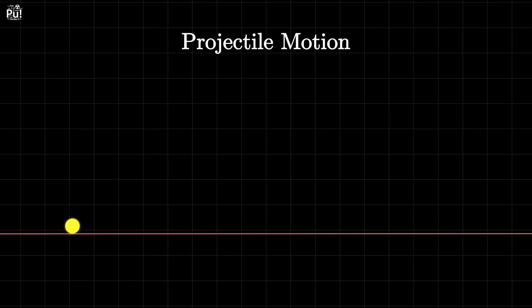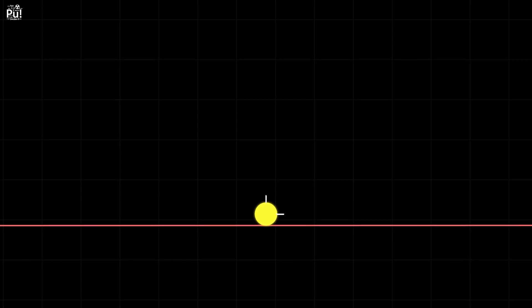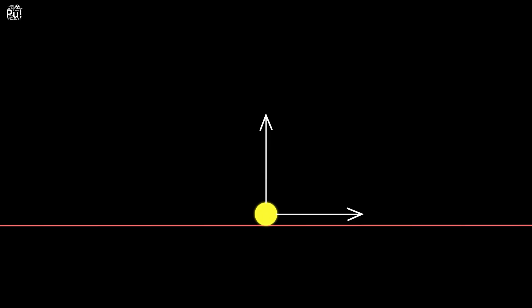When you kick a football at an angle, its motion may look like one smooth curve, but it's actually two separate motions happening at the same time. One is horizontal, the other is vertical.